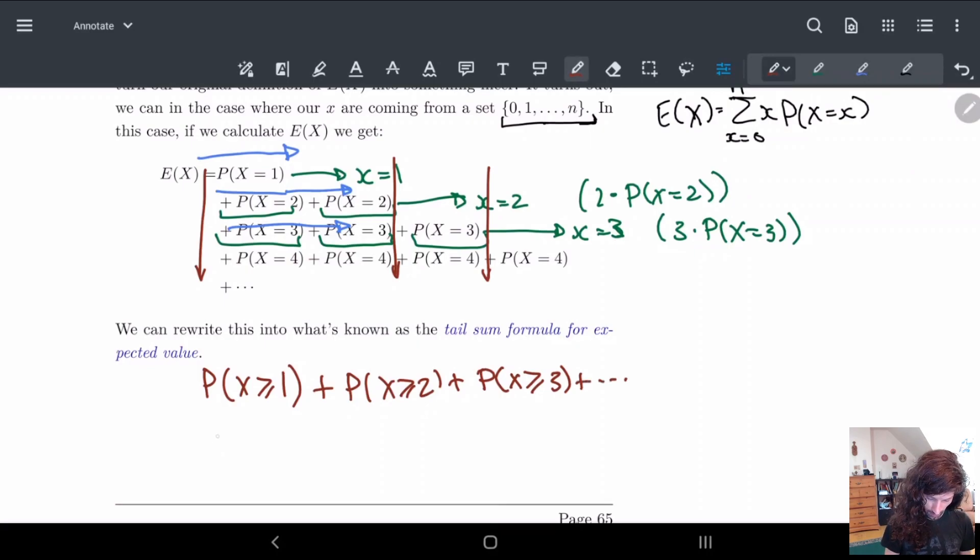What we end up having is another way of writing the expected value. The expected value in this case is just E(X) equals the sum from i equals 1 to n.